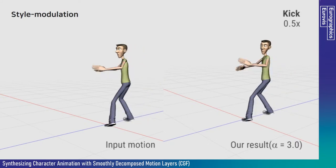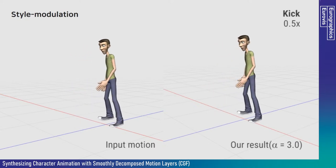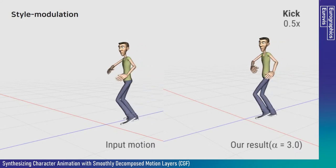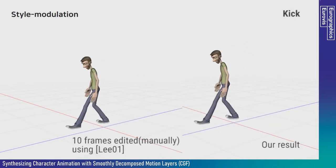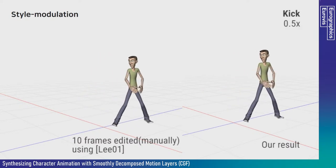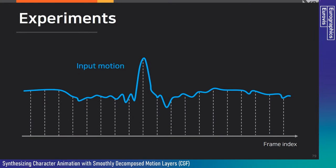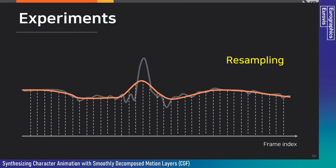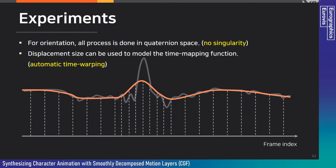For style modulation, we scale the controllable motion displacement of leg joint channels to generate exaggerated motion. Compared to previous work, our method modulates the original motion more consistently when the input motion has substantial rotational changes. For resampling, we solve the motion layer with a different frame rate, or with non-uniform samples for time warping. All orientation processing is done in quaternion space to avoid singularity issues.